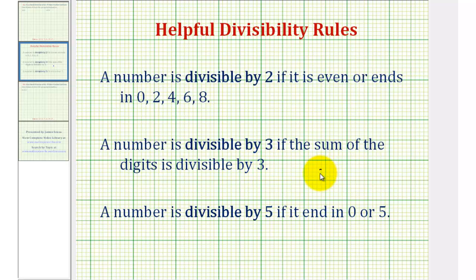For example, 336 is divisible by three because three plus three plus six is equal to 12. And since 12 is divisible by three, so is 336. And then finally, a number is divisible by five if it ends in zero or five.